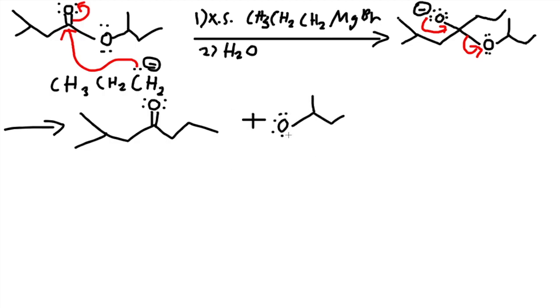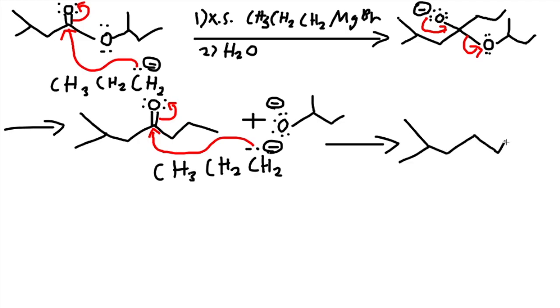Now we said excess, right? So let's use it again. So a carbon chain comes in again, attacks the carbon where the double bond of the oxygen is at, and makes it a single bond. Gives off the electrons to oxygen. So we added another carbon chain. So we have a total of three. Negative charge.